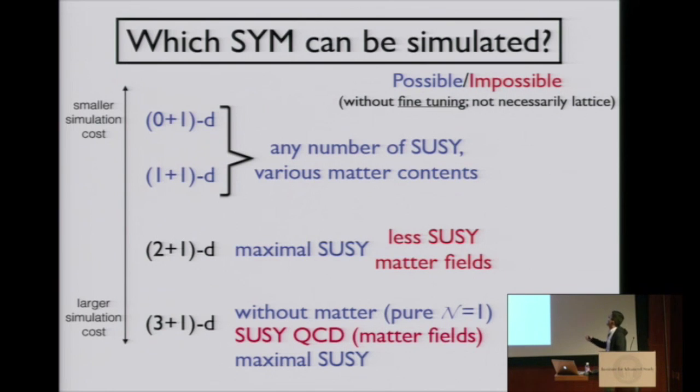What kind of super Yang-Mills theory can be simulated on computer? These theories written in blue is what we think we can study on computer using Monte Carlo technique. These theories written in red is impossible or we would say intractable to study with current knowledge. Here, possible or impossible means without fine-tuning. When you have to perform fine-tuning, simulation is essentially impossible.